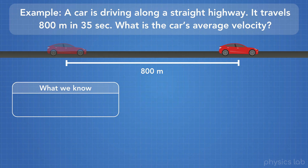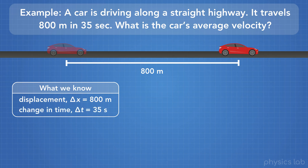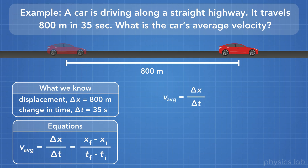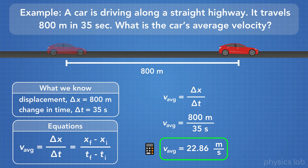For this problem, we know that the displacement of the car is 800 meters, and the change in time is 35 seconds. Since this problem wants us to find average velocity, we'll use the equation we just learned. Average velocity equals displacement divided by change in time. We plug in 800 meters for displacement and 35 seconds for the change in time. Doing 800 divided by 35, we find that the average velocity equals 22.86 meters per second.